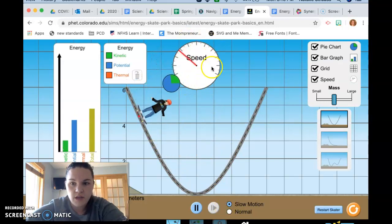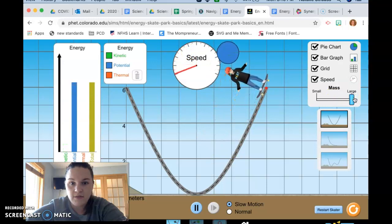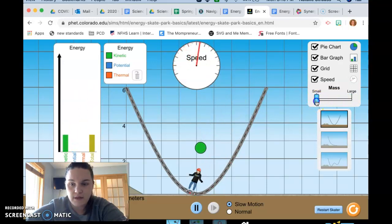We can watch as the speed changes. The last thing you can do is you can make your skater more massive or you can make them less massive by sliding this little thing.